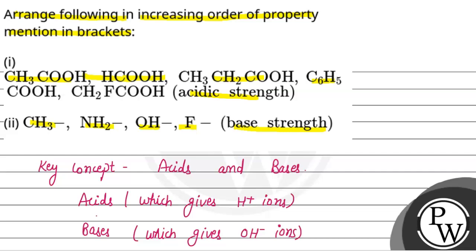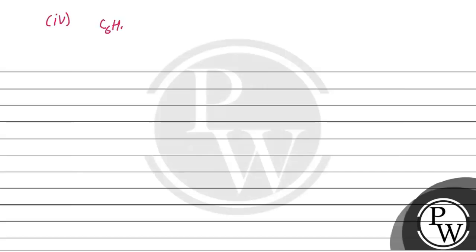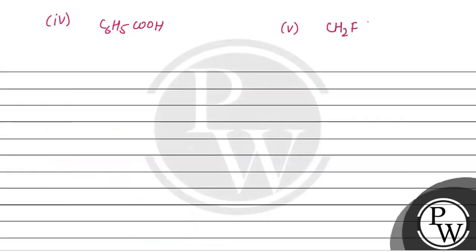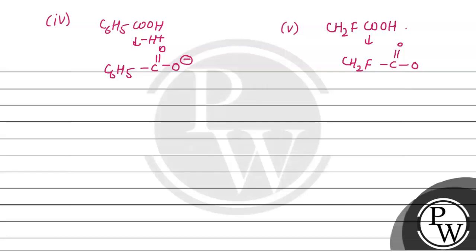Next चौथा compound है C6H5COOH और पांचवां है CH2FCOOH। H-positive lose करने के बाद C6H5COO negative और CH2FCOO negative बनेंगे।